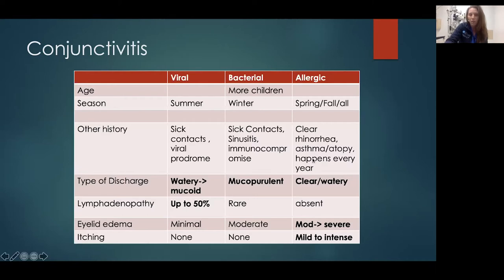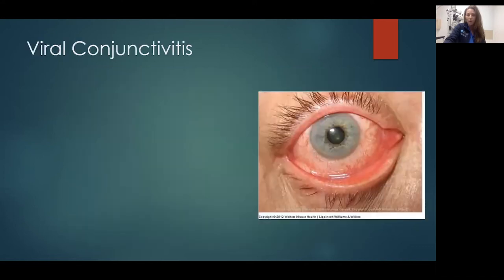Bacterial conjunctivitis is more common in the winter and in children. They may have sick contacts. You'd want to ask about sexual history, especially if you're worried about gonococcal conjunctivitis. They're going to have more mucopurulent — thicker — drainage from the eyes, and can also have eyelid edema. Allergic conjunctivitis is more seasonal, with typical allergy symptoms and atopy, presenting with more watery tearing versus purulent drainage, in a more chronic picture.